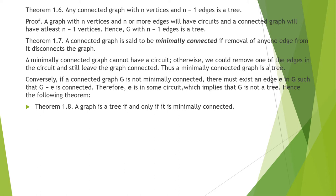Next theorem: a connected graph is said to be minimally connected if removal of any one edge from it disconnects the graph. The proof is: a minimally connected graph cannot have a circuit. Otherwise, we could remove one of the edges in the circuit and still leave the graph connected. So a minimally connected graph is a tree because it is connected as well as circuitless.